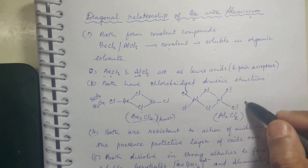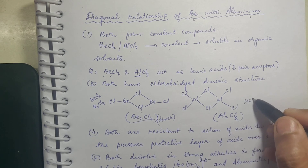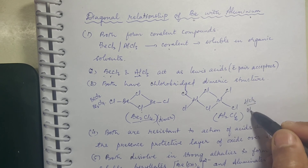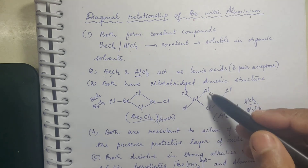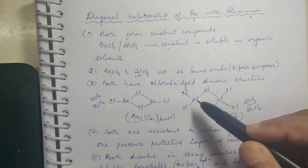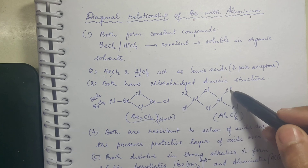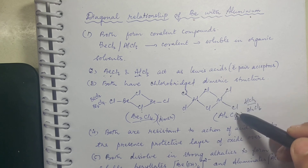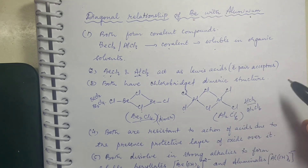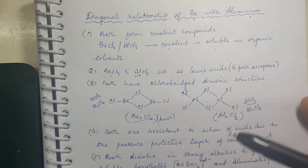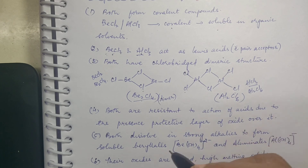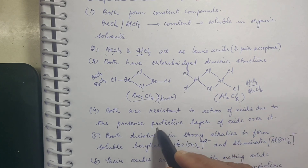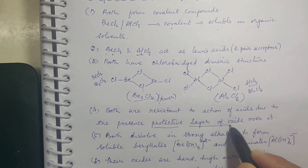Similarly, AlCl3 exists as Al2Cl6 — again a dimer, with 2 bridged chlorine atoms and each aluminium having 2 more chlorine atoms each. Both beryllium and aluminium are resistant to the action of acids due to the presence of a protective oxide layer.